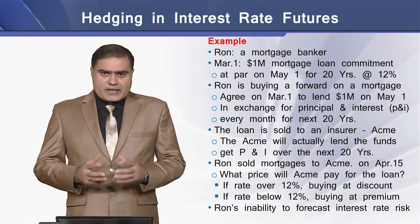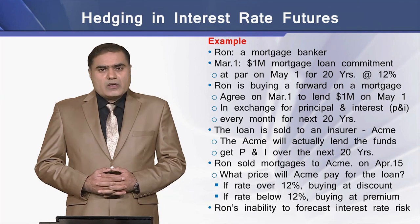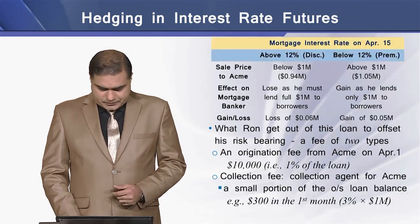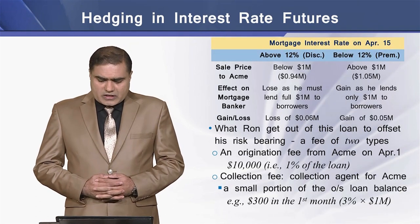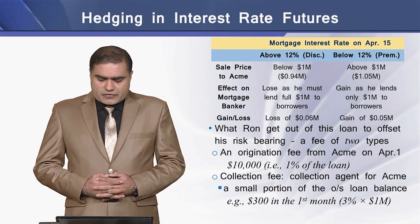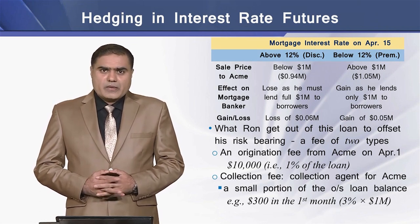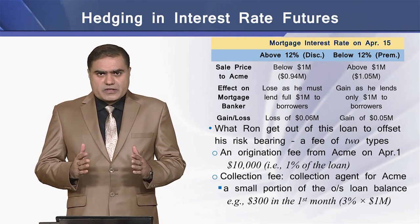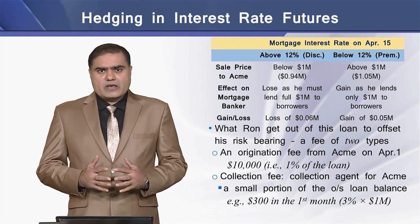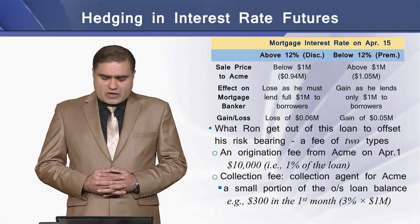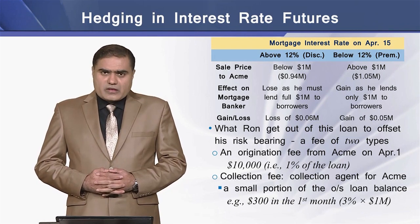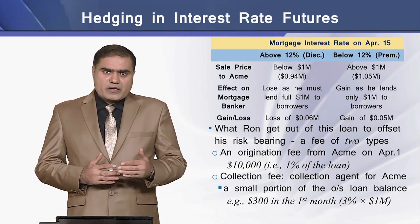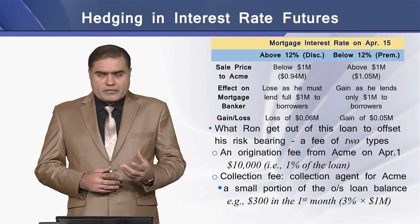We assume there is an inability of Ron to forecast interest rate movements in the days to come. On April 15, what happens if the interest rate is varying? We have two situations: above 12% and below 12%. In case of above 12%, the mortgage loan payment by Aceman will be below $1 million.